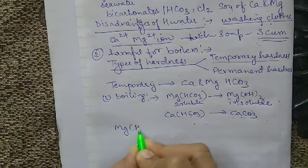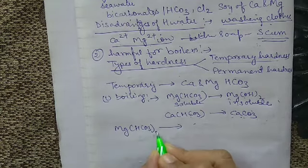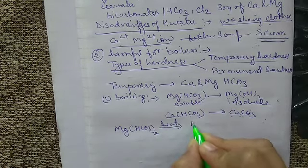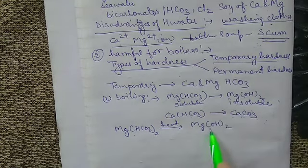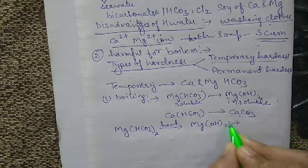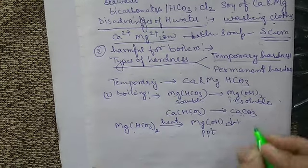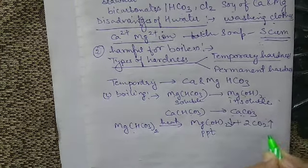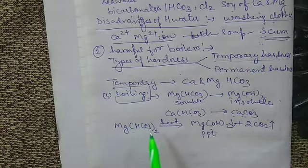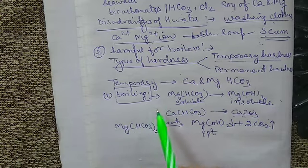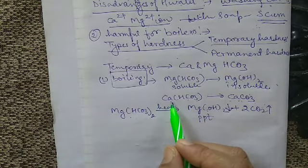When we heat magnesium hydrogen carbonate, it is converted into magnesium hydroxide — the original is soluble, the product is insoluble and deposited as a precipitate, and carbon dioxide gas is liberated. This is the first technique, known as boiling, by which we can easily remove the temporary hardness of water.